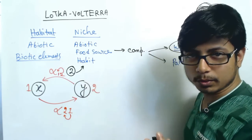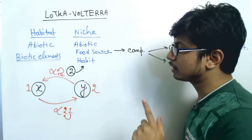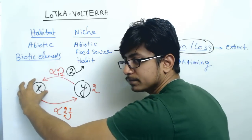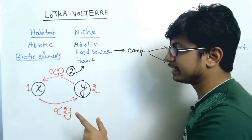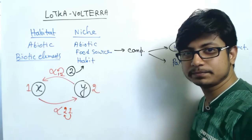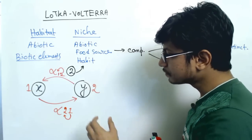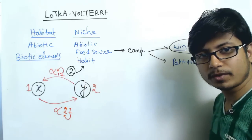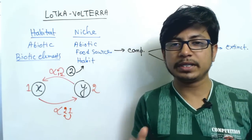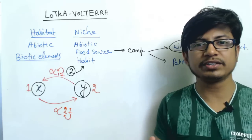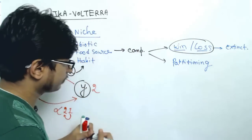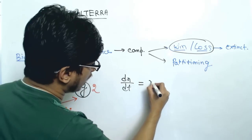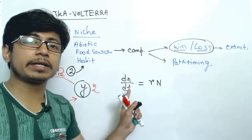If we are trying to know the population growth of species 2, we also need to count the population of species 1, because if the population size of species 1 is large, the growth of species 2 will be less due to competition. Similarly, if you are calculating species 1, the population size of species 2 also matters. According to the formula, we can calculate the intrinsic growth rate of a population: dN/dt = rN.